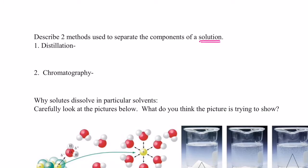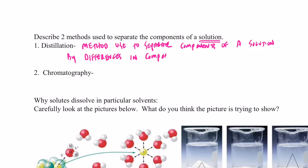We can use distillation as one method to separate the components of a solution, and distillation is simply a method used to separate the components of a solution by differences in the components' boiling points. And you'll see that in the demonstration here in just a little bit.